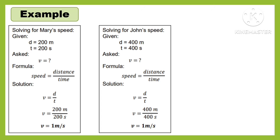Let us solve for Mary's speed. The given is the distance and the time. Distance is equivalent to 200 meters, and the time is equivalent to 200 seconds. What is asked in the problem? The answer is the speed. The formula of speed is equal to distance divided by time. So we divide 200 meters by 200 seconds. The answer is 1 meter per second.